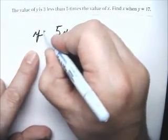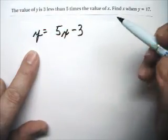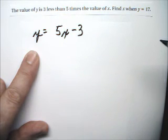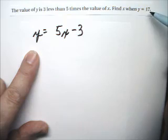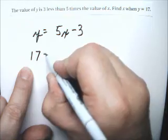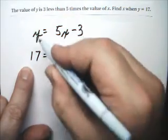Here's y is, is 3 less than 5 times the value of x. And we have to find x when y equals 17. So, 17, see, y is 17.